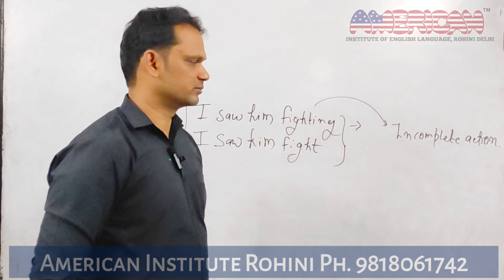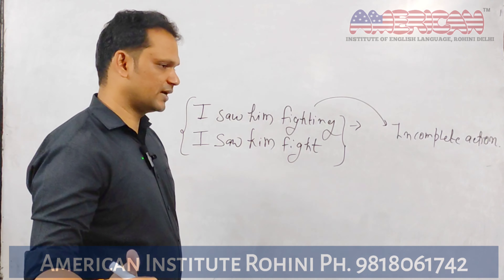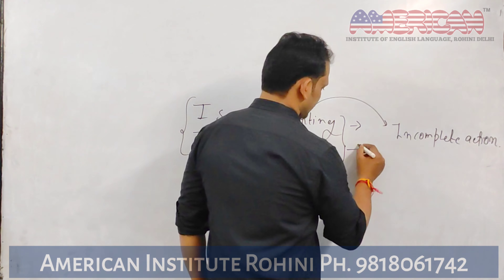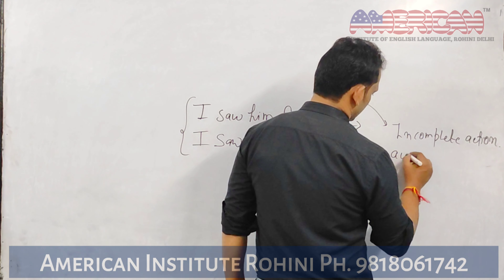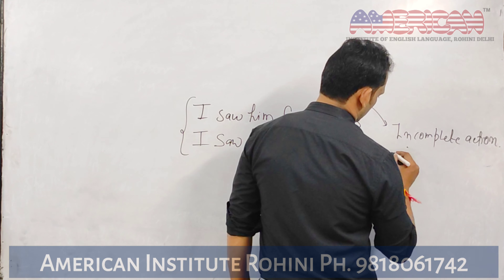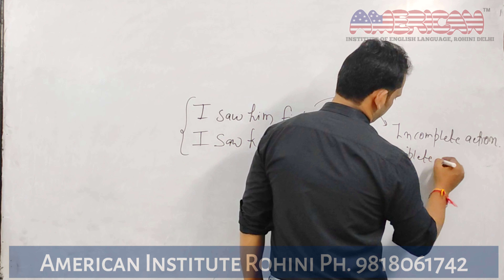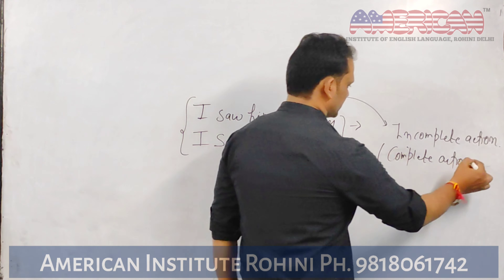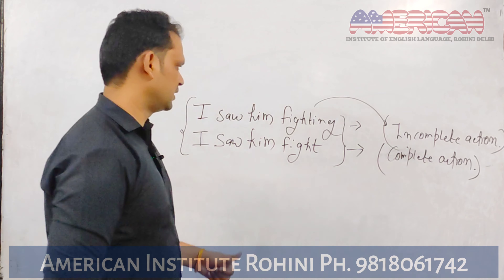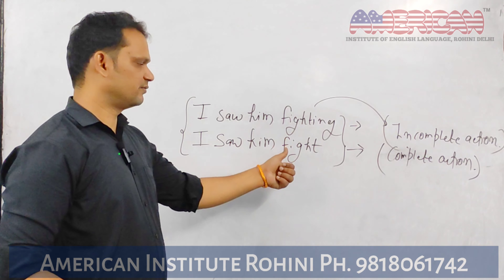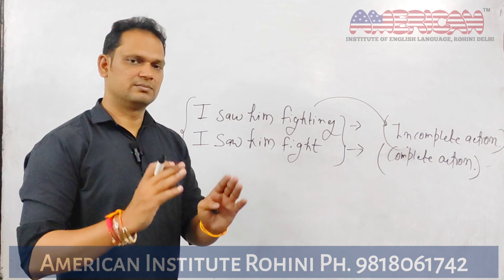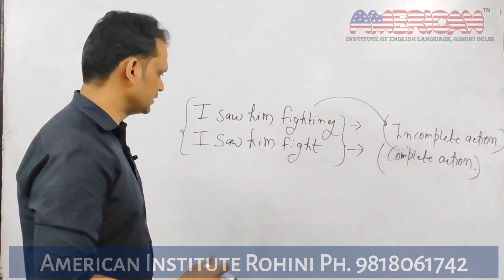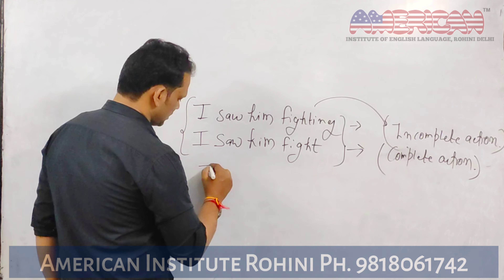Incomplete action. But when we use the second sentence — I saw him fight — it means I saw the complete action, I watched the entire fight from start to finish. So when we see a complete action, we use the first form of the verb. And where we don't see the complete action — where it is still in progress — we use the -ing form.